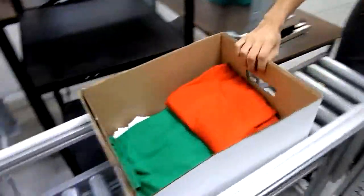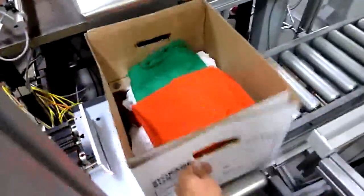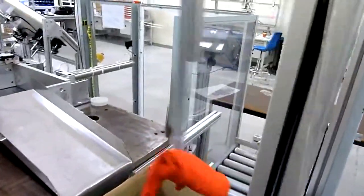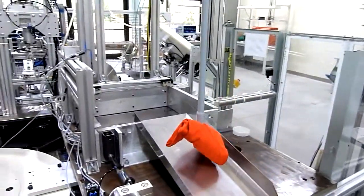A box of t-shirts enters the system. When a box is detected, it extends a cylinder to hold the box in place until all of the shirts have been taken out.